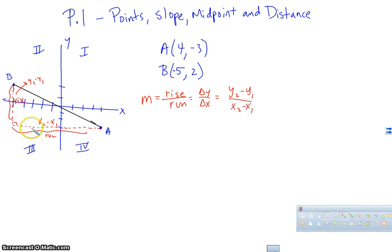So if I wanted to find the slope of this particular line segment, I would say that the rise over the run is, these will be my x2 and y2, and this will be my x1 and y1. So I'll have 2 minus a negative 3 over negative 5 minus 4, which is going to give me 2 plus 3 is 5, over negative 9. So my slope is negative 5 ninths.